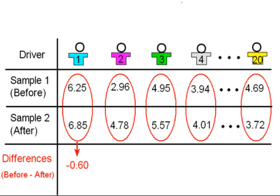For example, the difference in total reaction time for the first driver is 6.25 minus 6.85, which is negative 0.6.